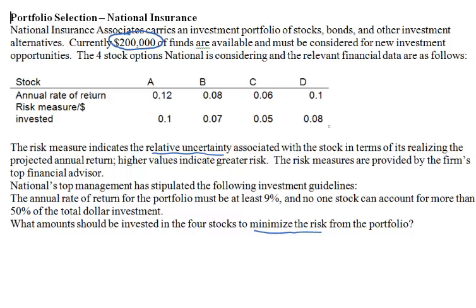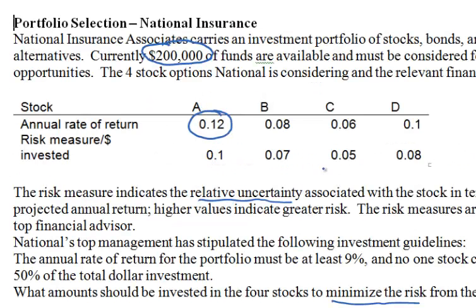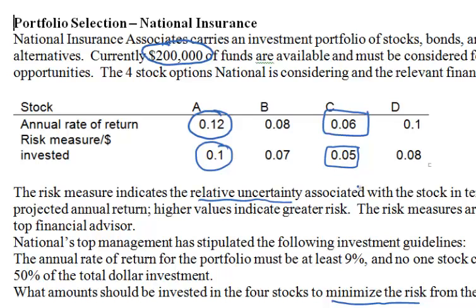Which stock has the highest rate of return? It's A. Notice that A also has the highest risk measure, 0.1. What is the stock with the lowest rate of return? It is C with 0.06, and its risk is the lowest out of all four stocks. So for C, the returns are not very exciting, but it is the safest stock out of the four.